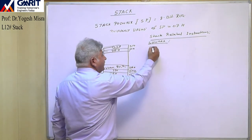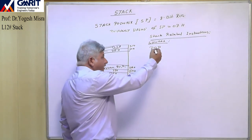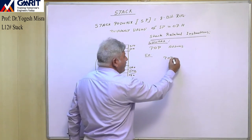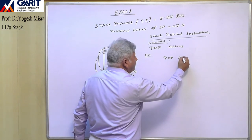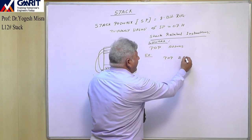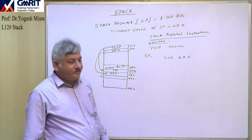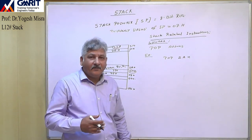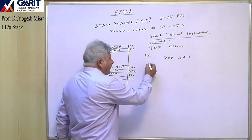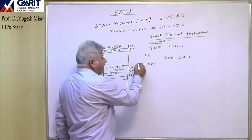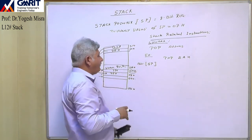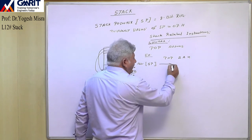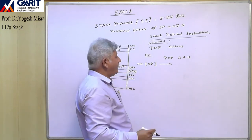The second instruction is POP. With POP, we again use an address — for example, POP 2AH. The purpose of the POP instruction is to retrieve content which was stored in the stack. With this instruction, whatever is the value of the stack pointer, from that memory address in the stack area, the 8-bit data will be moved to the address given with the POP instruction.